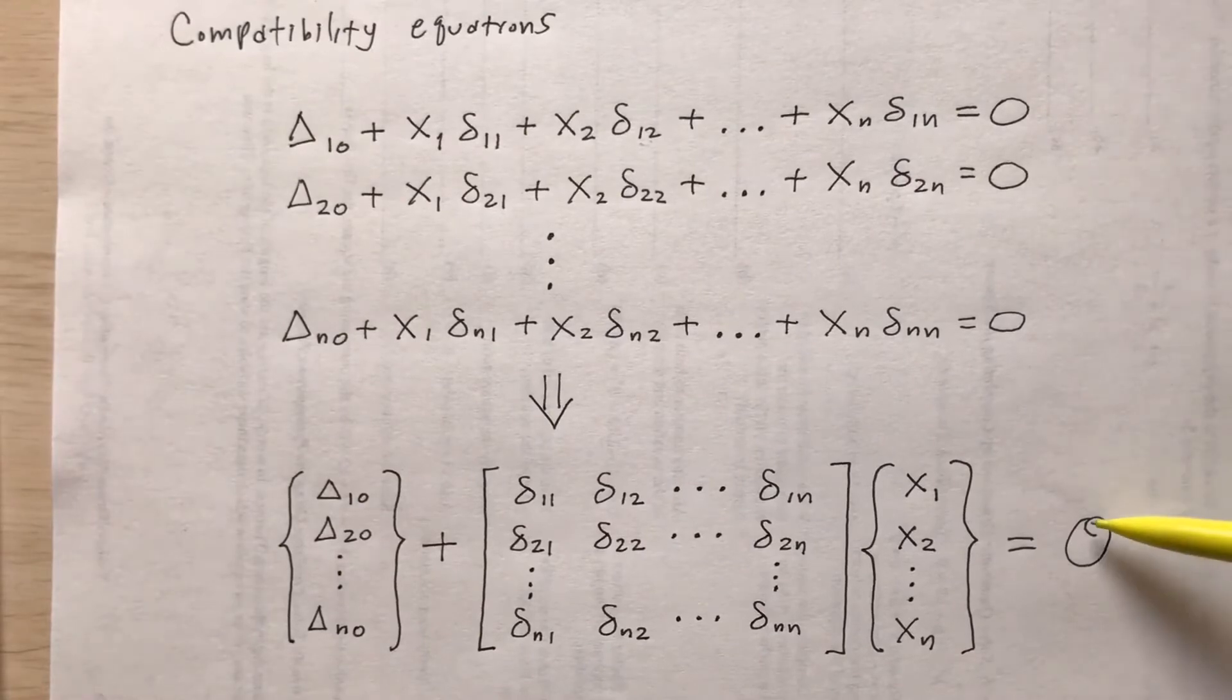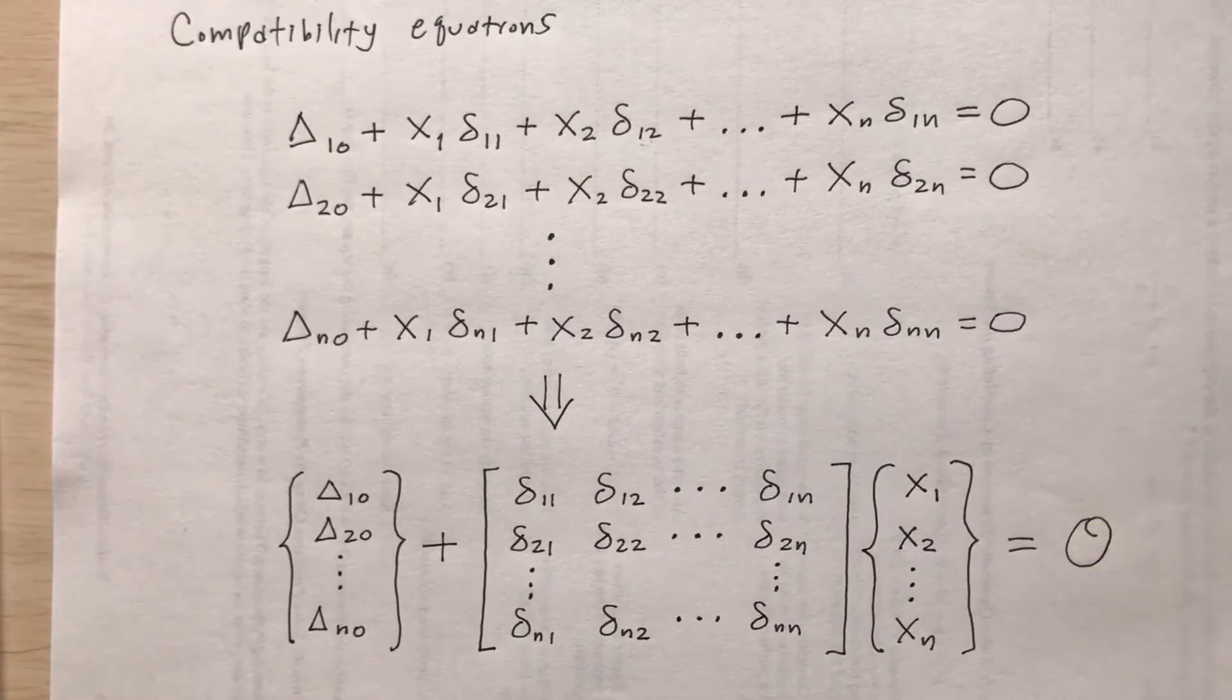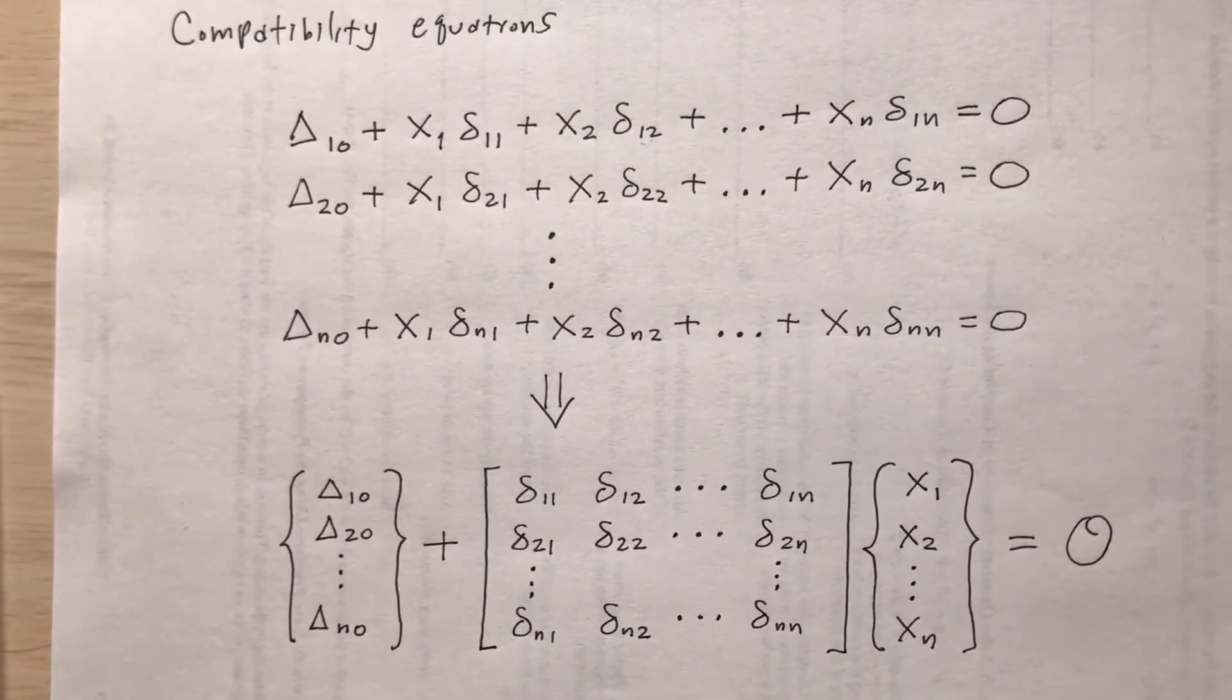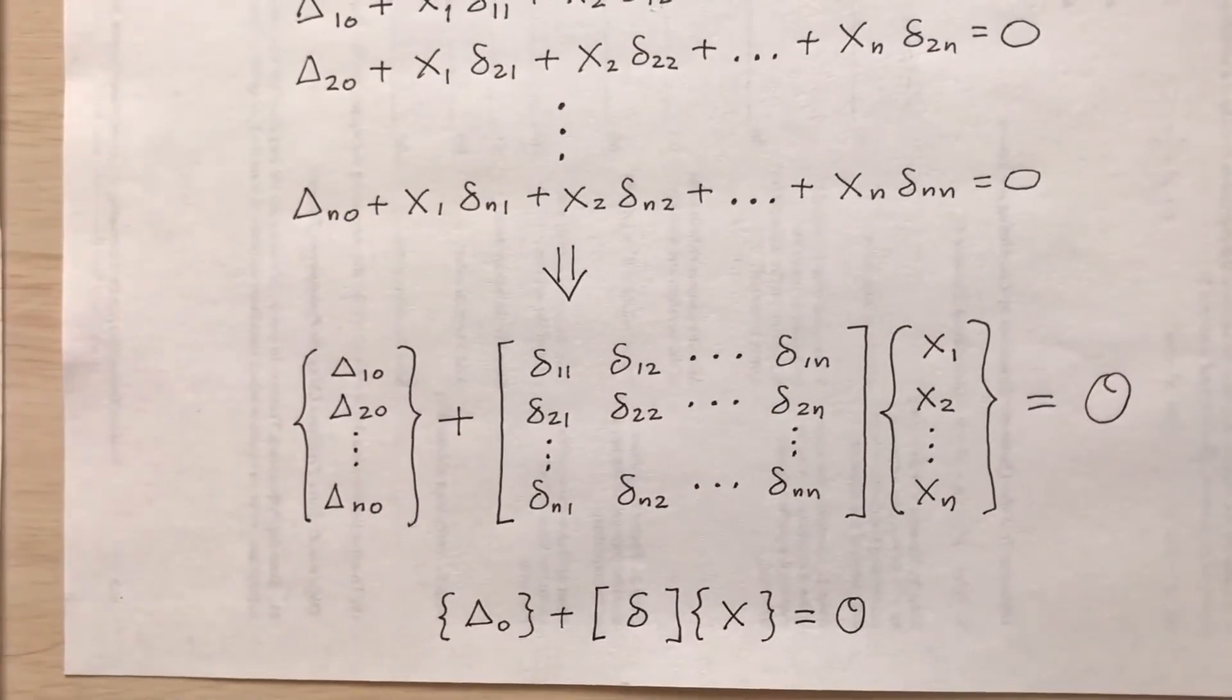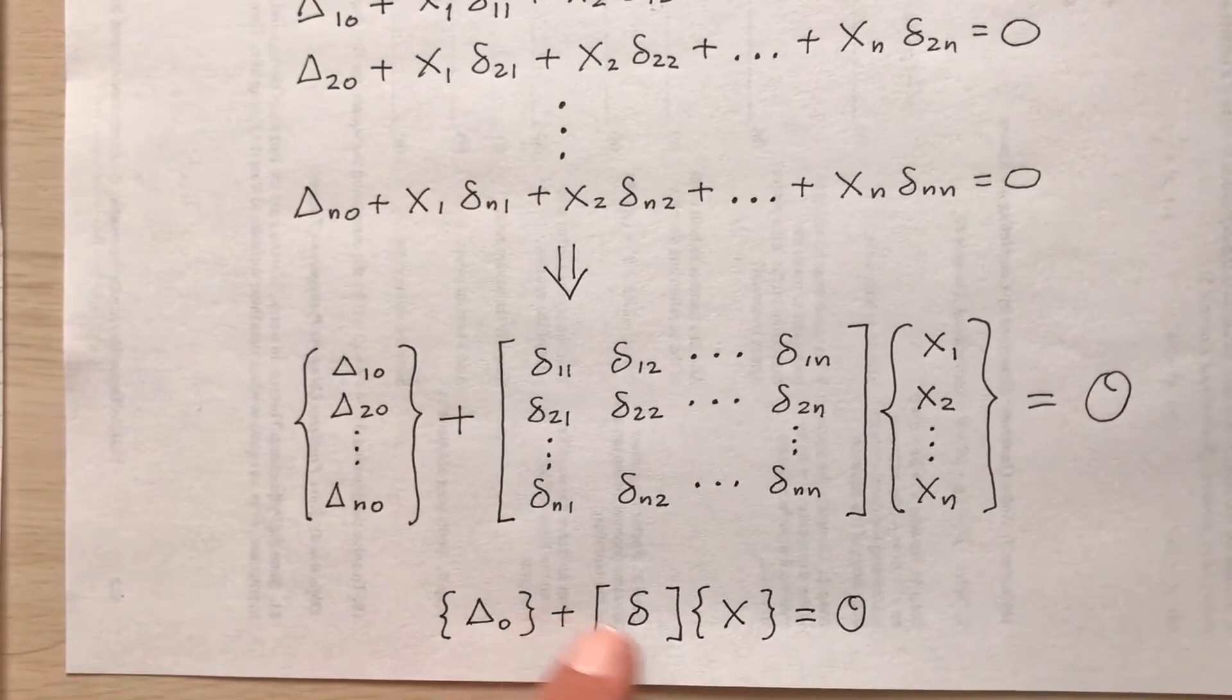Okay, so if you have a giant zero and a little tail inside, that means the zero vector. I can write this in a more compact form like this. Delta sub zero plus flexibility coefficient matrix times the redundance is equal to the zero matrix.